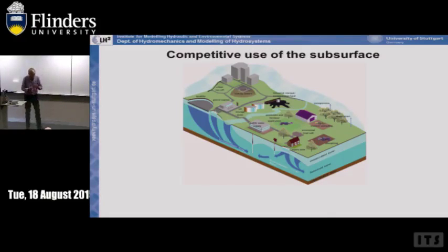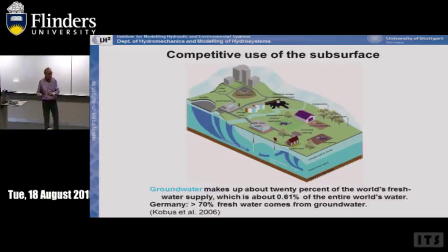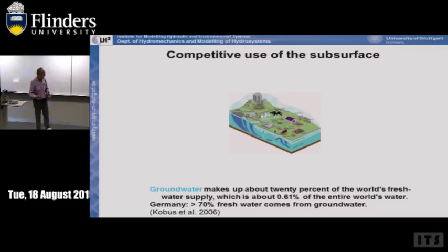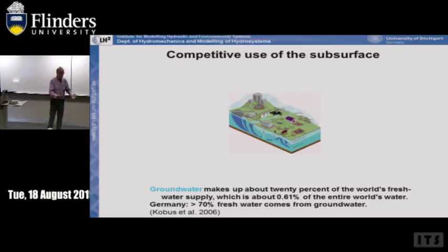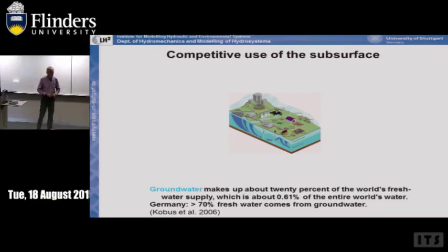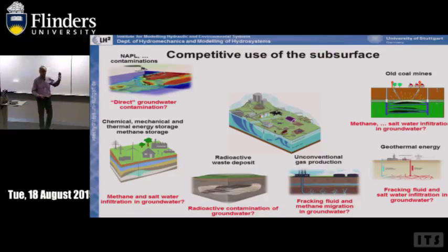Let me start with the first part of my presentation: the competitive use of the subsurface. Groundwater makes up about 20% of the world's freshwater supply, which is about 0.6% of the entire world's water — it's tiny. Germany gets approximately more than 70% of its freshwater from groundwater; the Netherlands and Denmark get 100%; Switzerland 80%; the United States about 60%; and here approximately 25-30%.